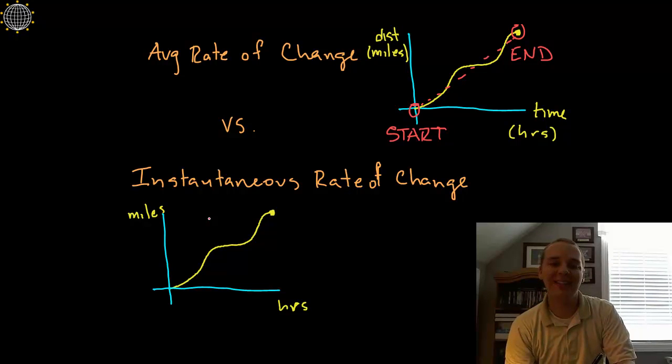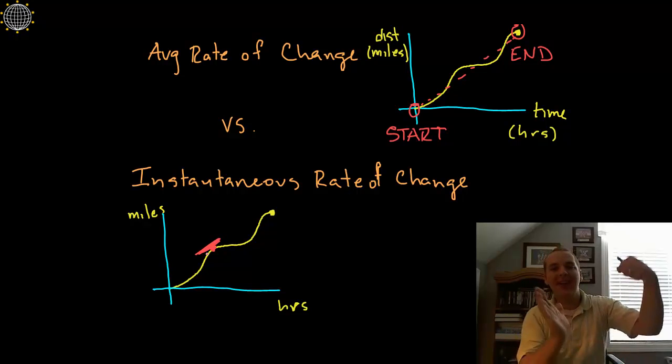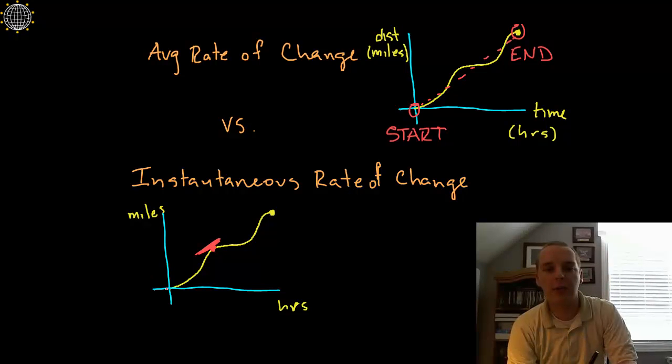Now on the other hand an instantaneous rate of change is if you're in your car and someone were to call you and say what does your speedometer say right now and you took a peek at your speedometer and you told them instantaneously you're going 55 miles per hour. That's instantaneously at that specific moment. So on the graph you can see here just one point being defined a slope would be of a tangent line to the curve not between a starting point and an ending point.